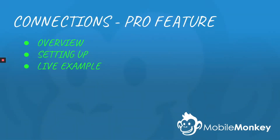Hi, this is Craig with MobileMonkey. Today we're going to be talking about the Connection Widget. This is a pro feature that allows you to take data from MobileMonkey that people type into your bot and export it to another platform like Infusionsoft, your autoresponder, or a spreadsheet. I'm going to give you a quick overview. We're going to set one up and then we're going to do a live example. Let's go.